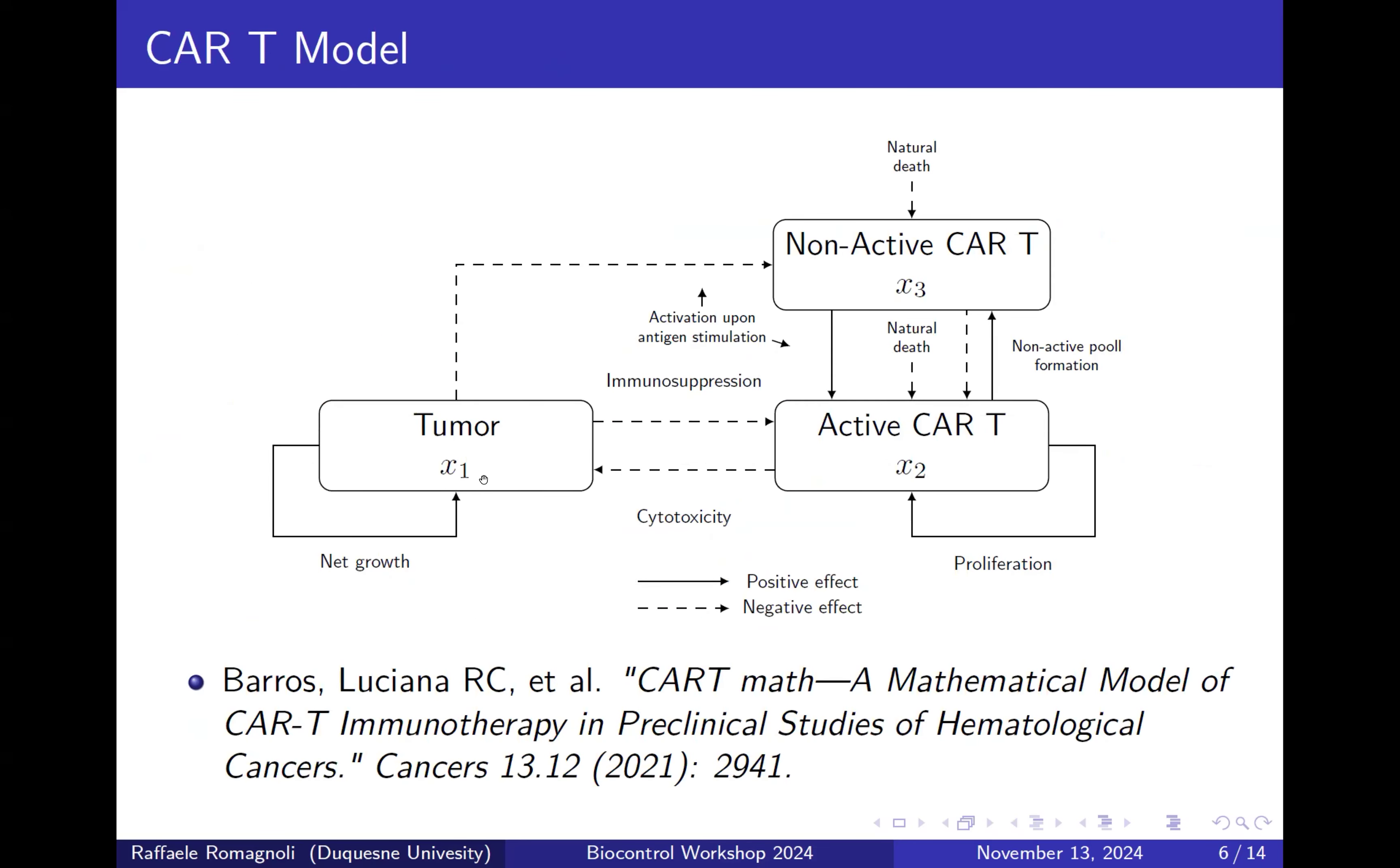So first of all, we need a control-oriented model. In some research, I found this particular model where we can see that we have three subsystems: tumor cell, non-active CAR-T cell, and active CAR-T cell. Here you can see from the schema the positive effect. We have an increase of the tumor cell because it's proliferating, but then the active CAR-T cell are going to kill this tumor cell. But at the same time, the tumor cells are triggering the non-active CAR-T cell into active CAR-T cell.